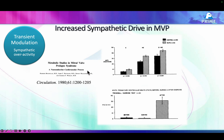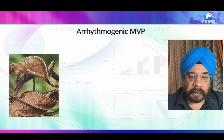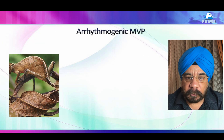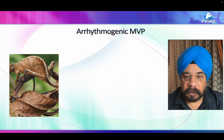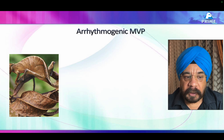Regarding transient modulation, an older study showed that patients with mitral valve prolapse tend to have increased sympathetic drive and increased norepinephrine in the system. So all three elements — trigger, substrate, and modulation — put together produce arrhythmogenic mitral valve prolapse.